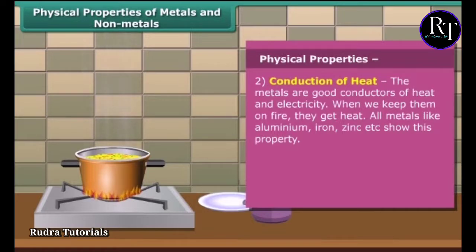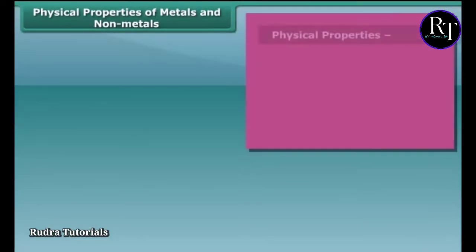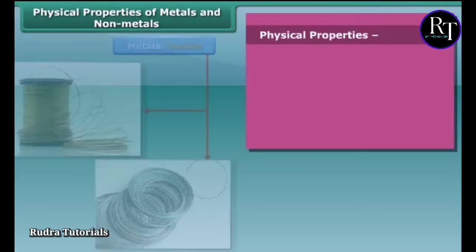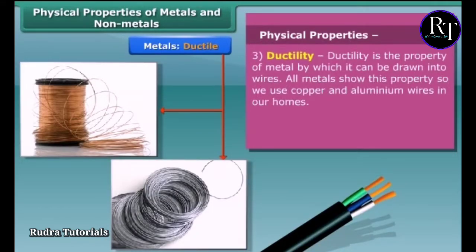The next property is conduction of heat. Metals are good conductors of heat and electricity, while non-metals are poor conductors. The property of metal by which it can be drawn into wires is called ductility — this is the third property of metals.